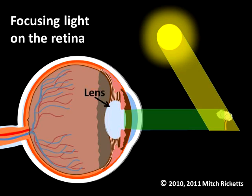The lens further changes the direction of the light rays to improve the focus. The focused light then strikes the retina. If we are looking directly at the tree, its image will fall on the fovea where the cones are densely packed. If the visual system is healthy and has no defects, we will see the image clearly.